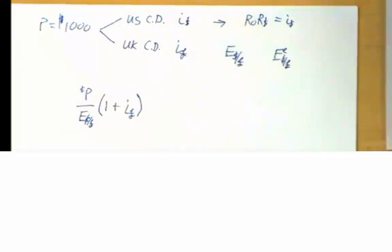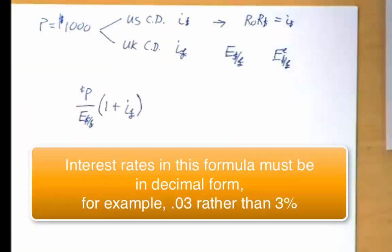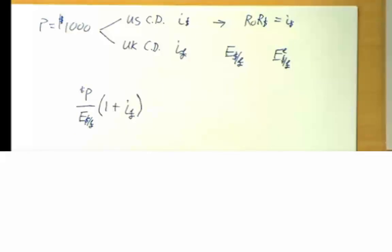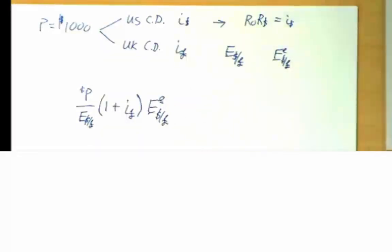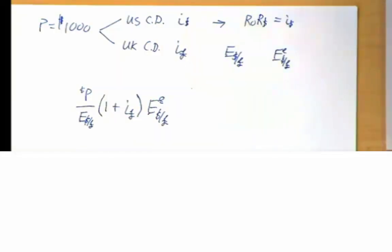To convert back to dollars, we multiply the year-end pound amount by the expected dollar-per-pound exchange rate E-superscript-e. So the entire expression — P divided by the spot rate, times one plus I-pound, times the expected rate — gives the expected number of dollars the investor holds at year end. To calculate the rate of return on the pound investment (ROR-pound), we compute the percentage change: take the final value, subtract the original value P, and divide by P.